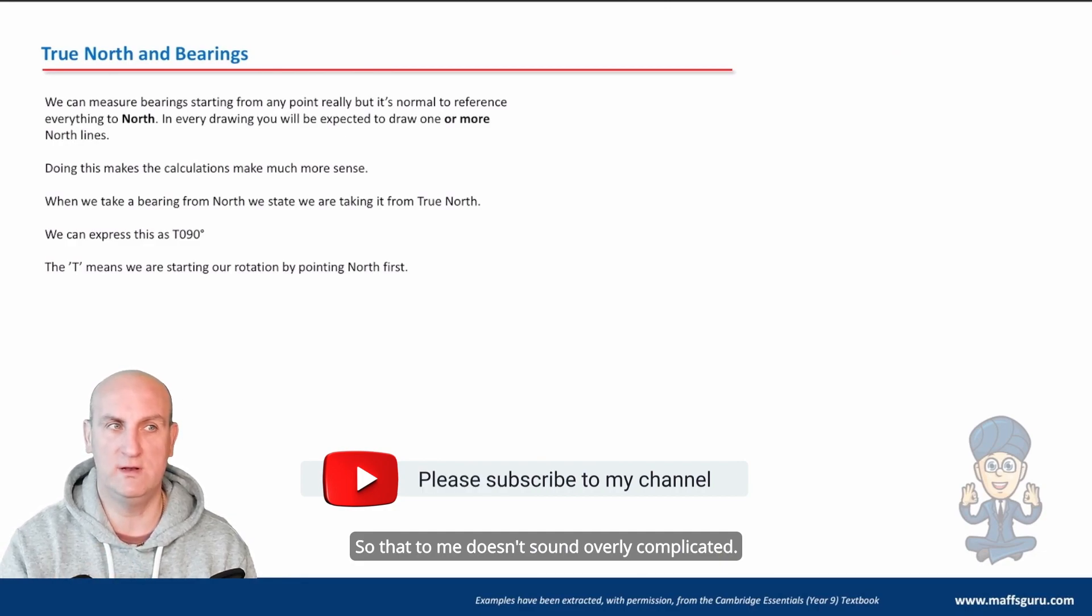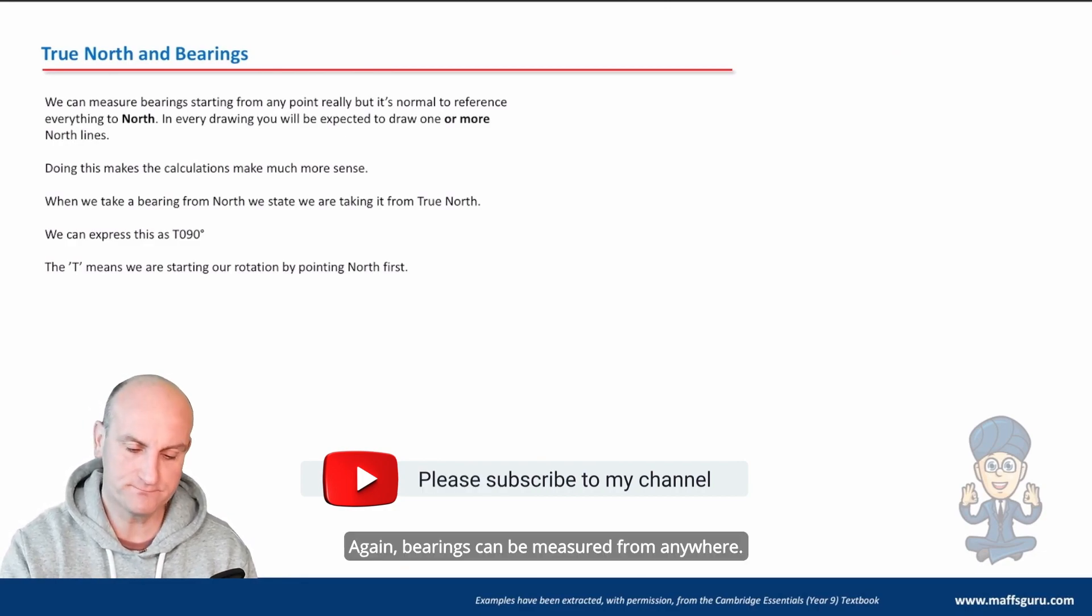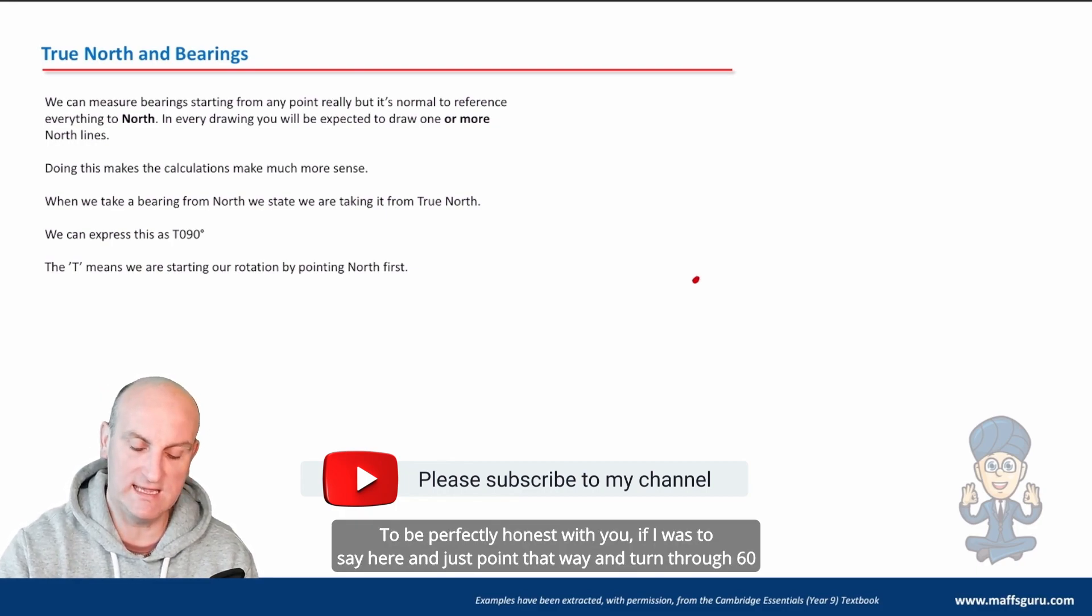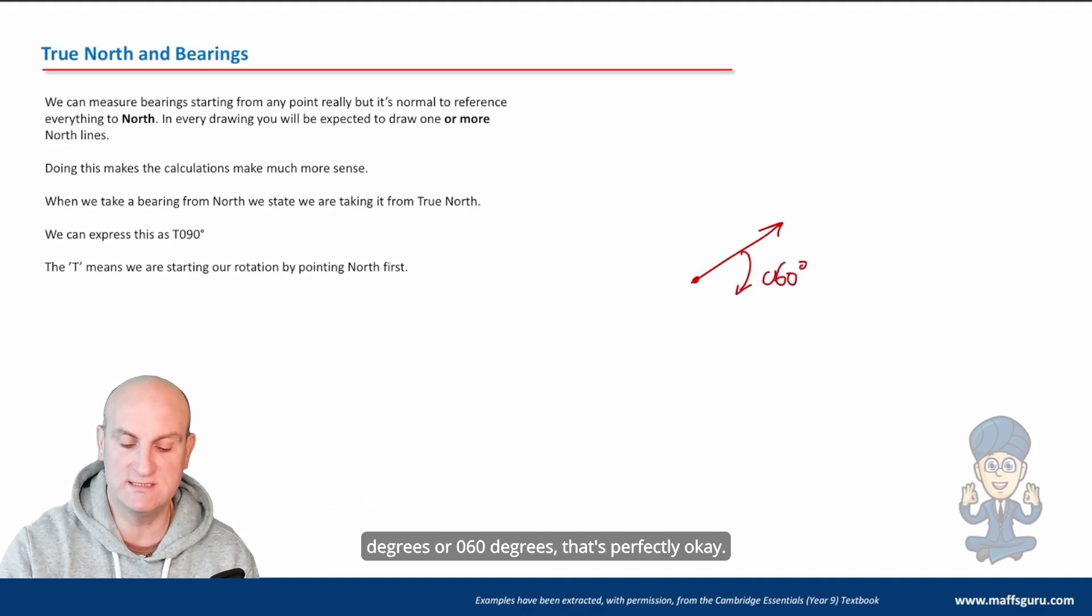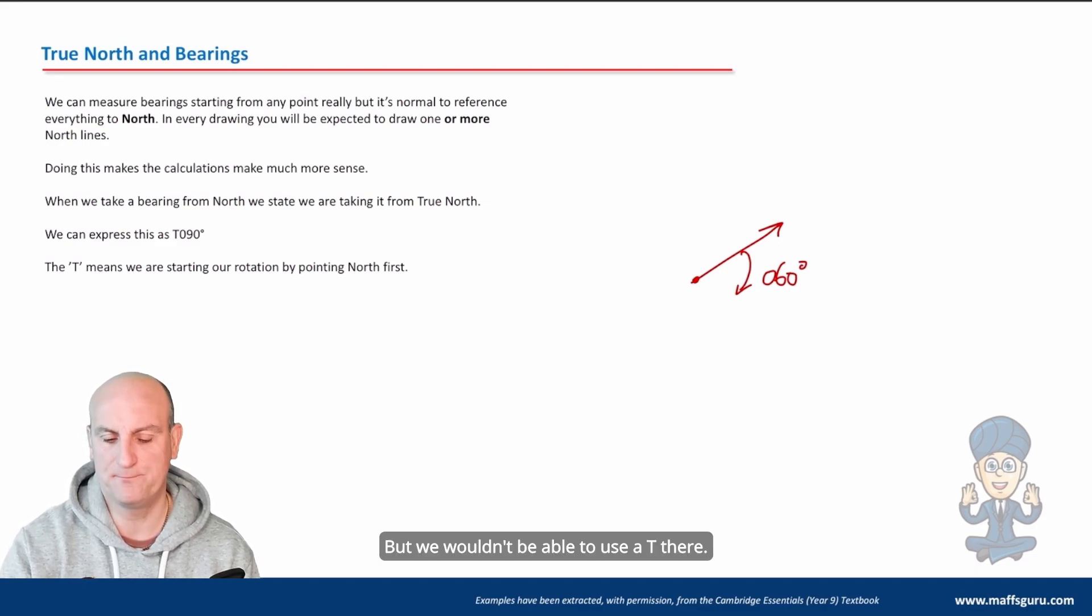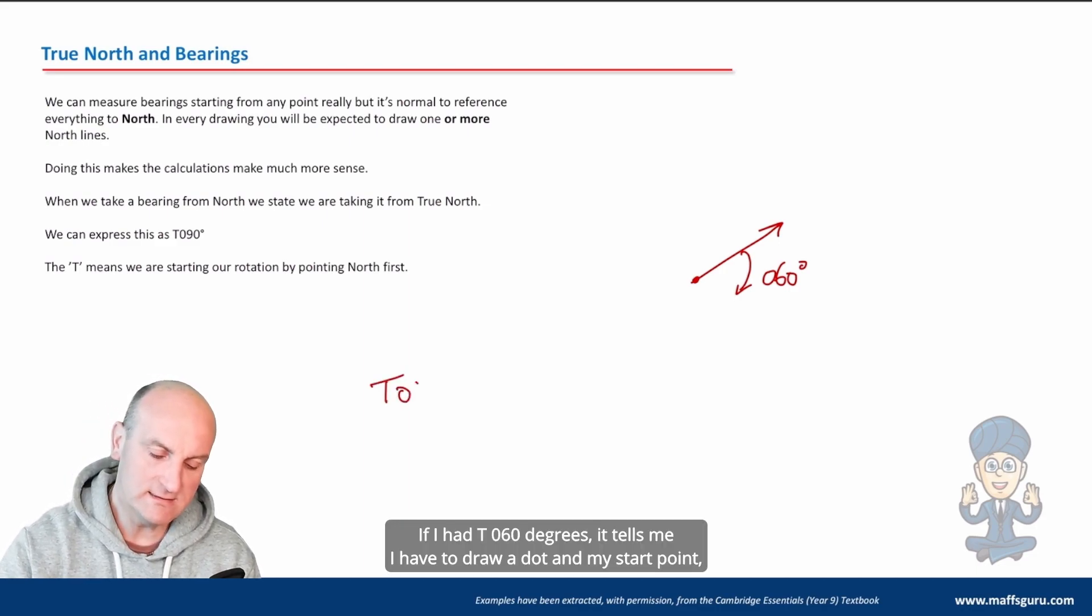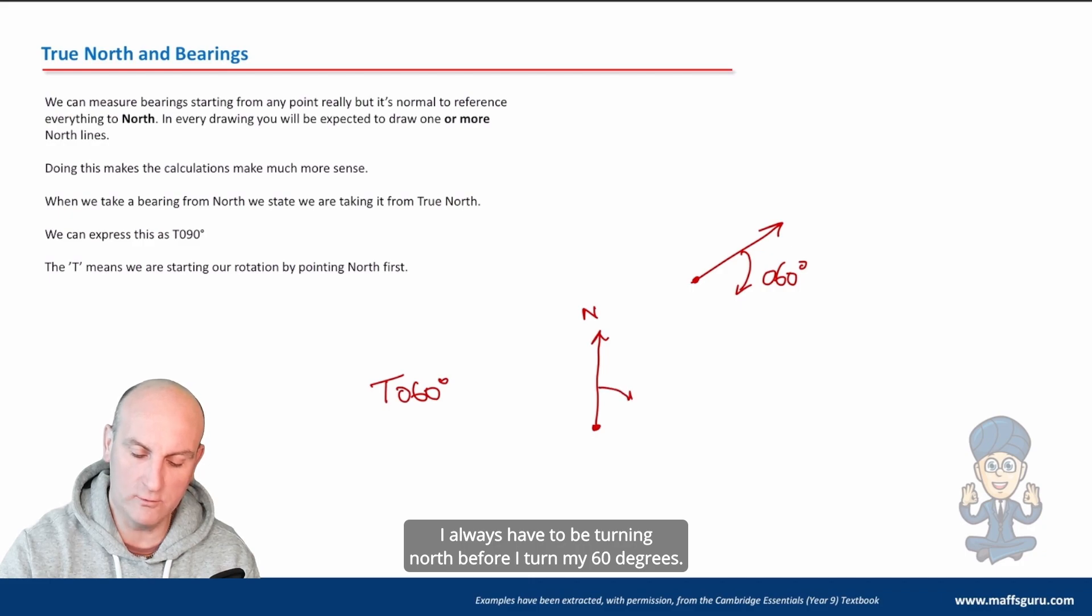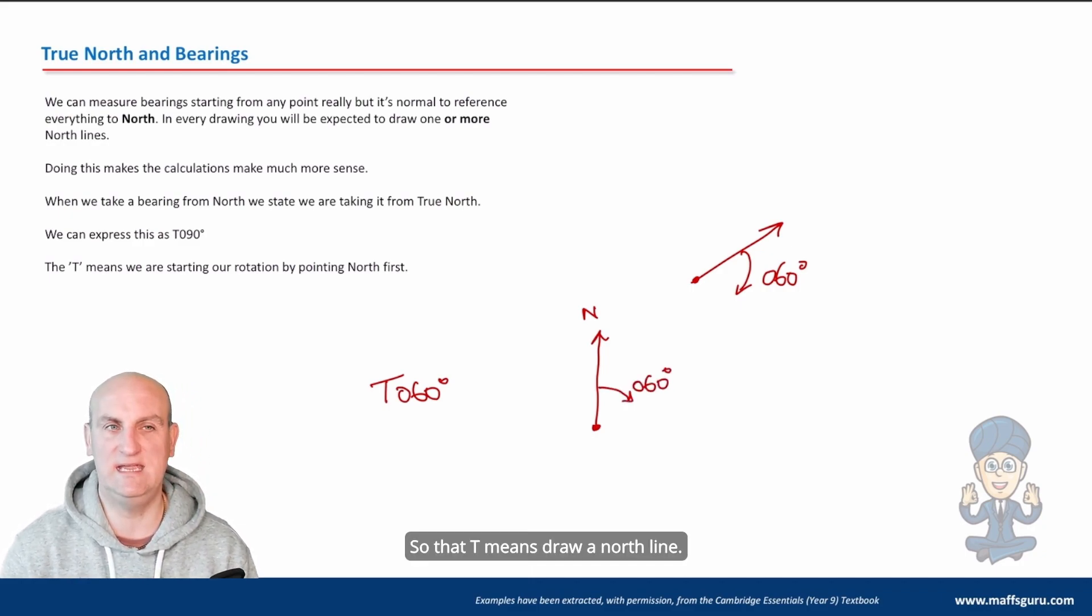And we use a capital T to denote any bearing where we've used the north line as a reference. So a capital T is called true bearing. It's called a true bearing because we're using true north. So that to me doesn't sound overly complicated. Again, bearings can be measured from anywhere. To be perfectly honest with you, if I was to say here and just point that way and turn through 60 degrees or 060 degrees, that's perfectly okay. But we wouldn't be able to use a T there. If I had T 060 degrees, it tells me I have to draw a dot. And my start point, I always have to be turning north before I turn my 60 degrees. So that T means draw a north line. Really important.